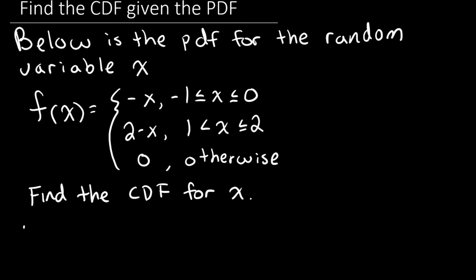Let me start by writing down the definition of a CDF. We use capital F to notate that we are dealing with a CDF, as compared to the lowercase f, which means that the function is a PDF. People will write capital F of t for a CDF. We replace the lowercase x with a lowercase t for convenience and to not get confused with too many x's flying around. You can always change this lowercase t back to a lowercase x, and some teachers will ask that you change it back to an x as your last step.